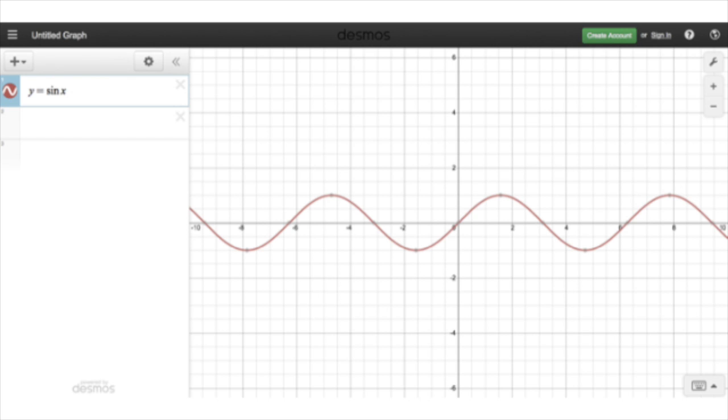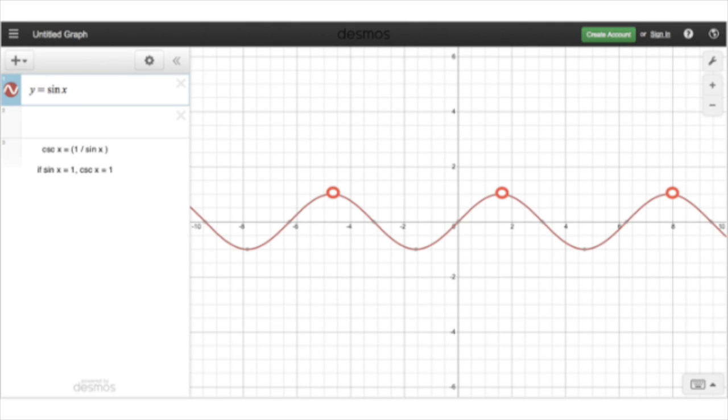And so, as you're starting to think of where would the cosecant be in terms of its graph, one thing you know for sure is that when the sine is 1, the cosecant will be 1. It's the reciprocal.